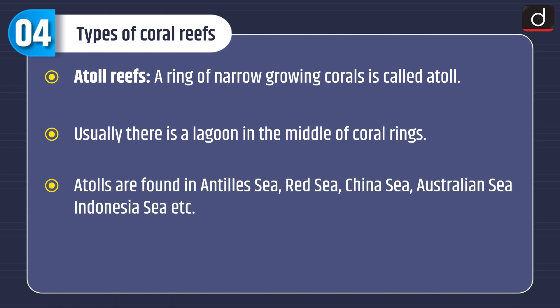The last type is atoll reefs. A ring of narrow-growing coral is called an atoll. Usually there is a lagoon in the middle of the coral ring. Atolls are found in the Antilles Sea, Red Sea, China Sea, Australian Sea, Indonesian Sea, etc.